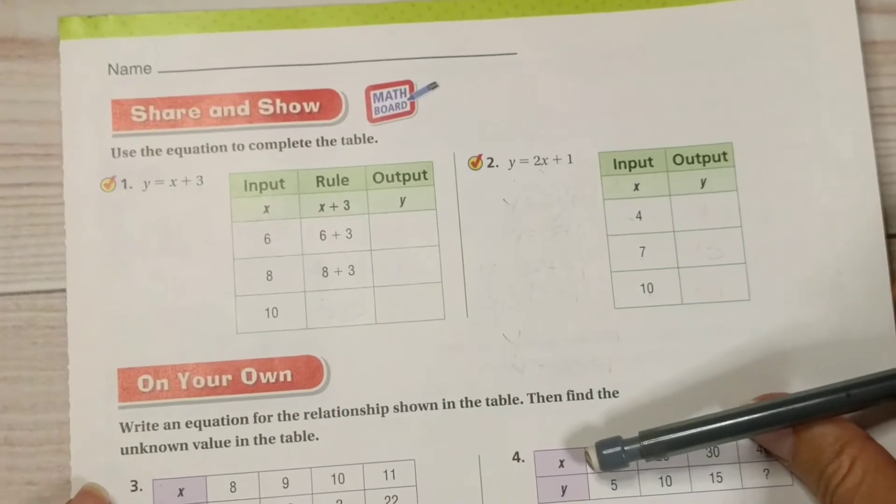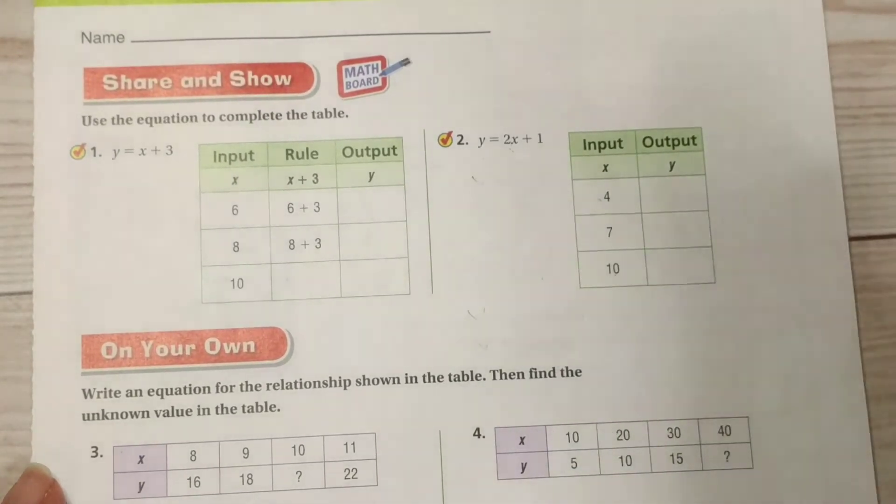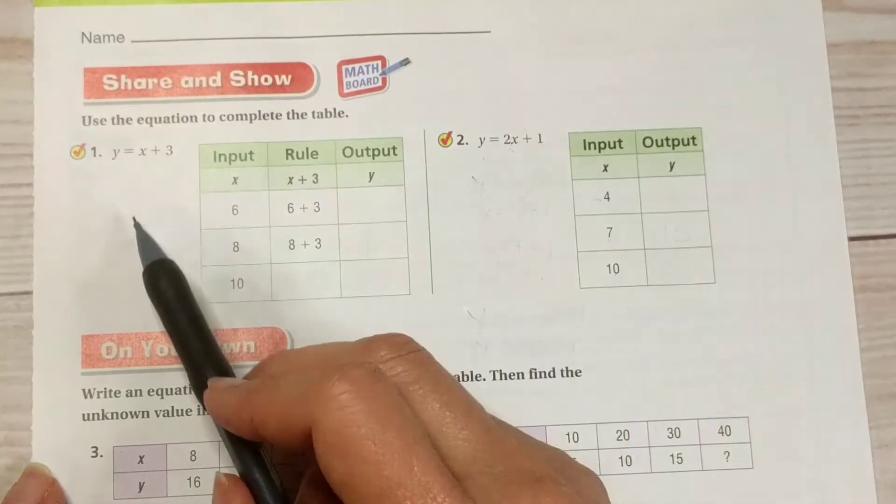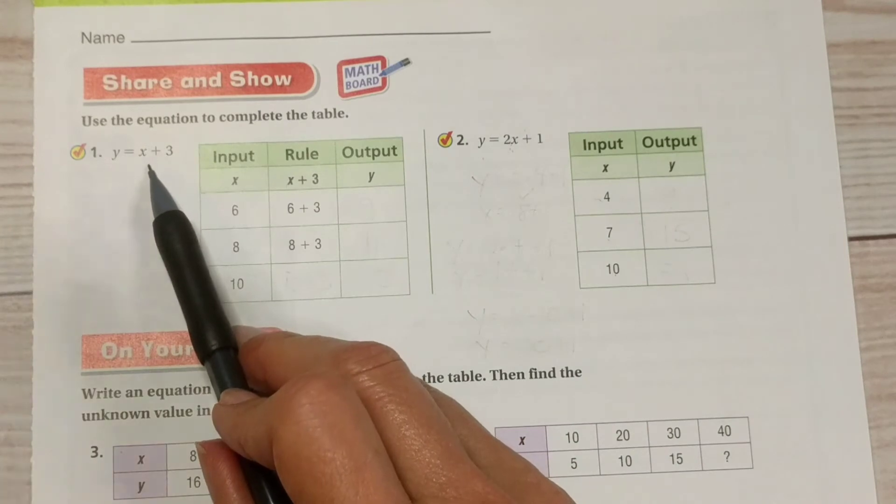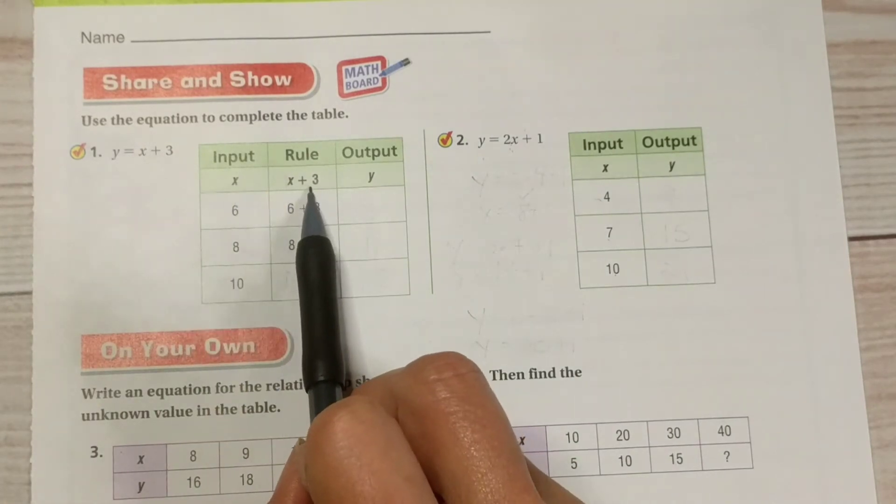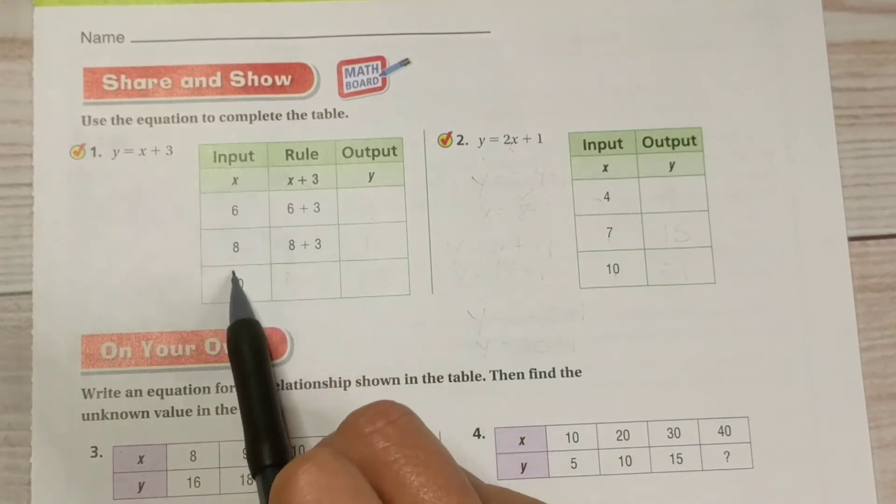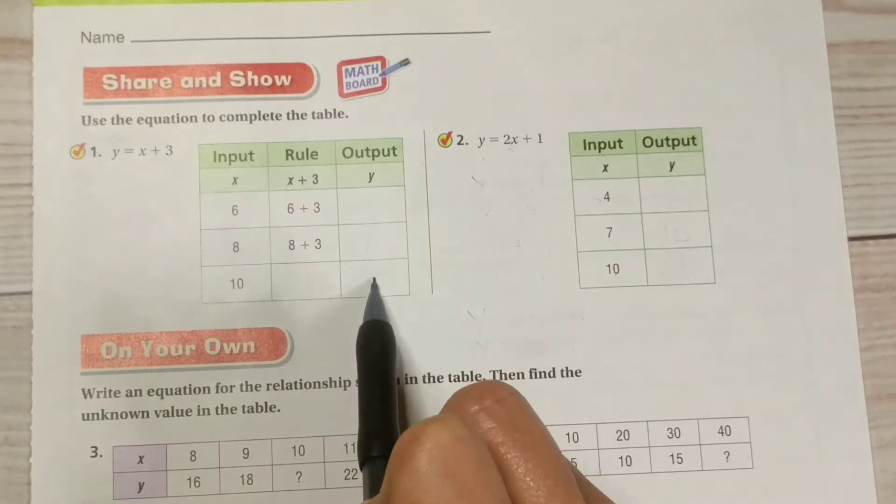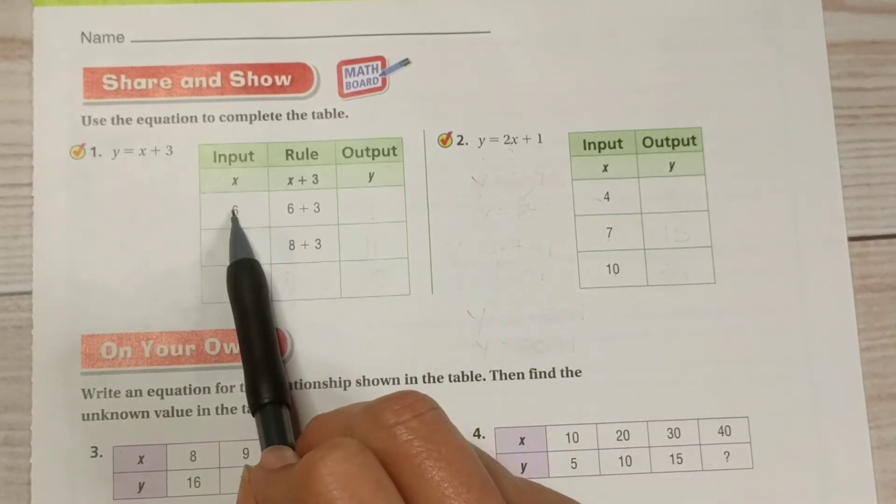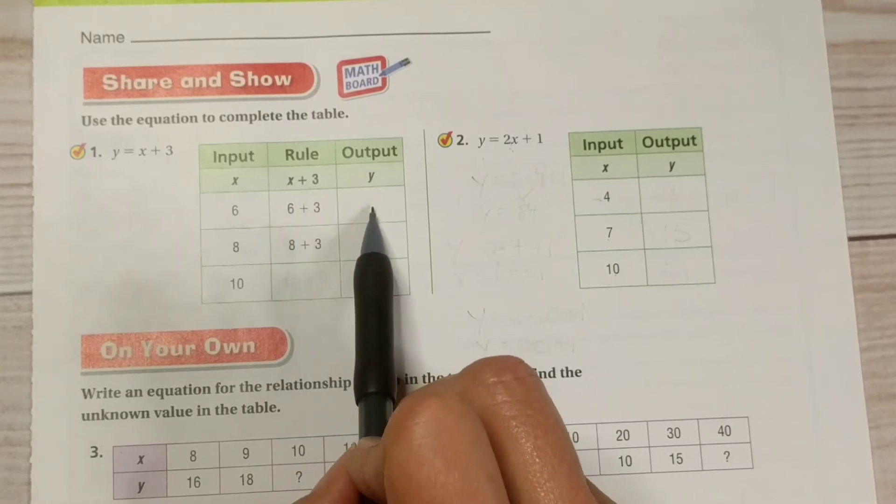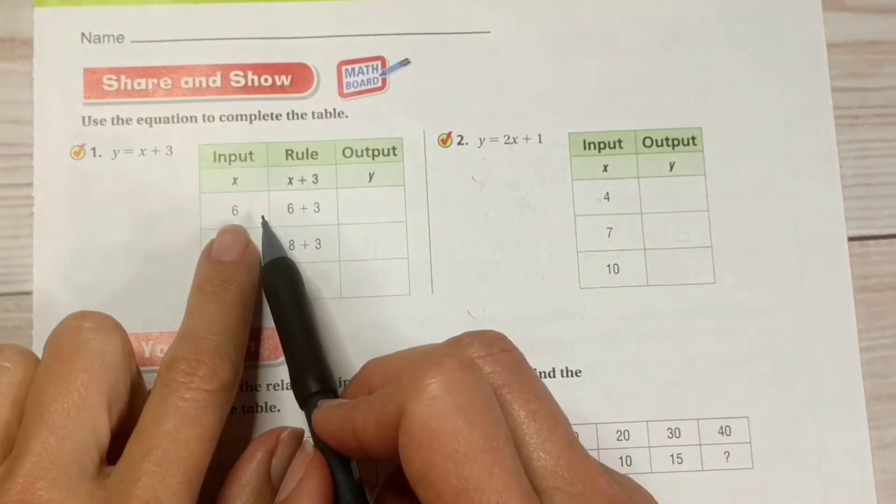All right. Let's move on to our next table over here. We're on page 363. Y equals X plus 3 is our rule or equation. These are input values. These are output values. So, basically, we're just going to take these numbers, put them in for X, and get our Y value.